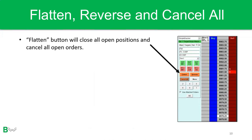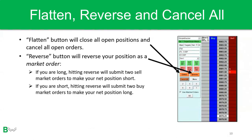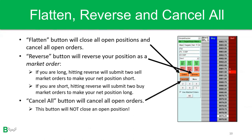One more thing to cover, especially if you're trading futures with an active ladder: there are buttons called Flatten, Reverse, and Cancel All. The Flatten button closes all open positions and cancels all open orders — it's the go-to when you want to get out and avoid leaving orders open after you're done trading. The Reverse button reverses your position as a market order: if you're long it submits two sell market orders to go short, and vice versa — my rule of thumb is to never use this button. The Cancel All button cancels all open orders but will not close an open position; that's what Flatten is for.